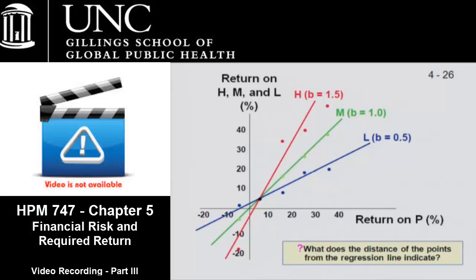So what does that mean? For every percentage increase in the return on P, you see a higher return on H than you would on M because of a steeper slope. So if P is the stock market and H is Amgen, the fact that it has a beta of 1.5 tells us that the stock returns of Amgen are 1.5 times as risky as the stock market as a whole.